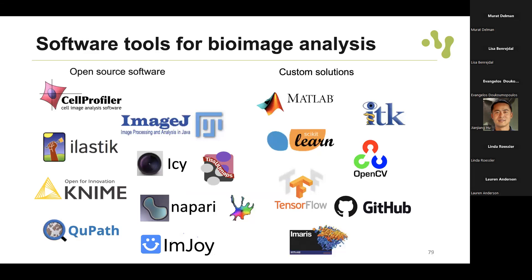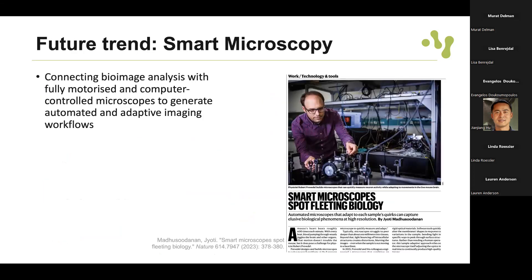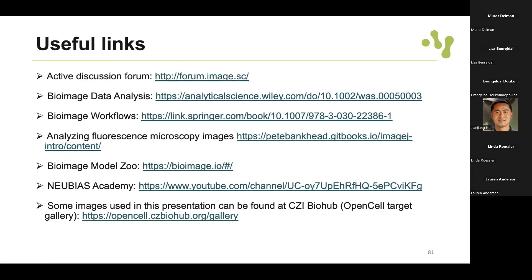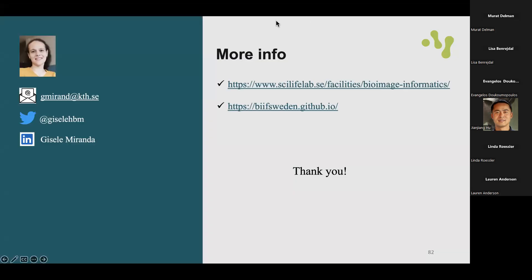Finally, briefly about software tools - I'll leave the slides for you, of course there are lots of tools out there and these are just a few examples. If interested, there are papers from last year about future trends in microscopy - smart microscopy connecting bioimage analysis with fully motorized and computer-controlled microscopes - where you could test things like segmentation even during acquisition time. I think that's one of the future trends in microscopy. I'll leave some useful links here as well. Sorry for the time!